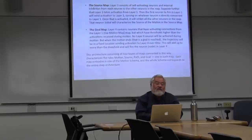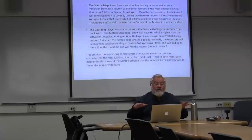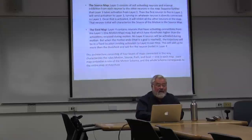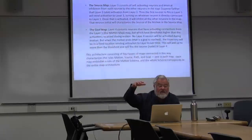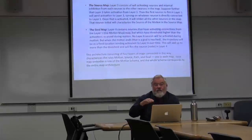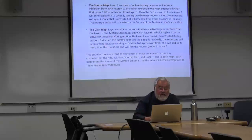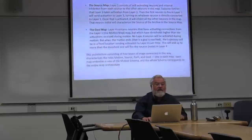Layer three has self-activating neurons with internal inhibition from each neuron to all others in the map, so the first one activated inhibits all others — giving you a source. Layer four has neurons with activating connections from layer one but with thresholds higher than normal motion activation, so that when motion stops, continued activation crosses the threshold to activate the goal map. So the architecture gives four layers of maps — motion, source, path, and goal — one in each map. That's one way of characterizing the embodiment of a motion schema.